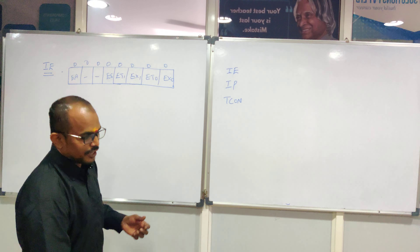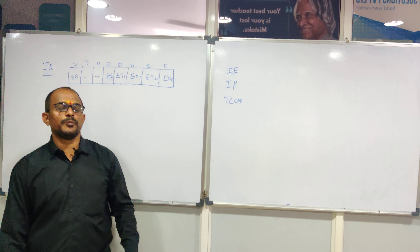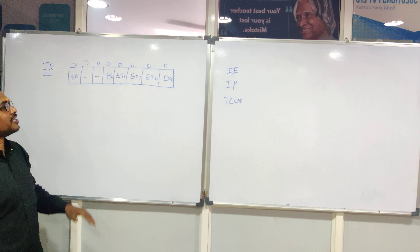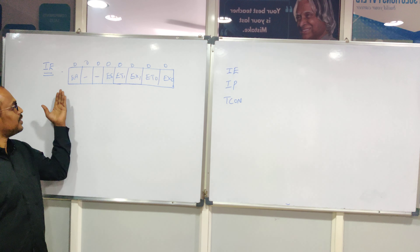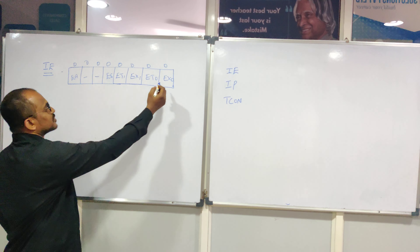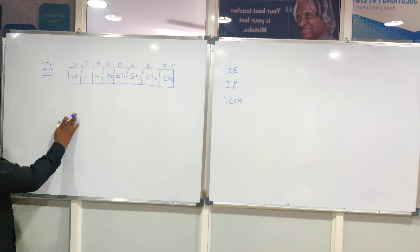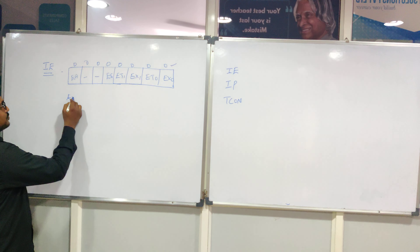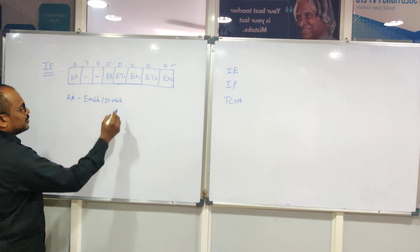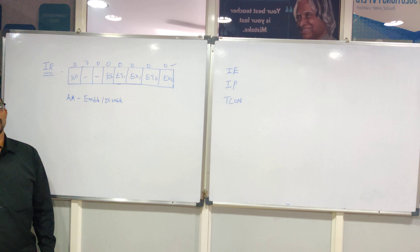Coming to the first SFR register from the interrupts block, which is IE — the Interrupt Enable or Disable register. This register has 8 bits, and all bits have a default logic of 0. The first bit is EA, which means enable all or disable all interrupts.